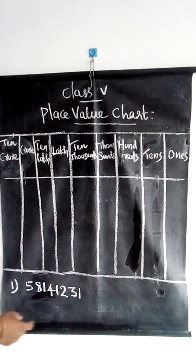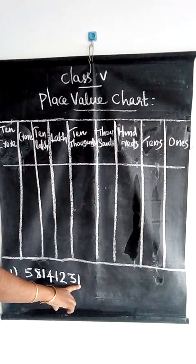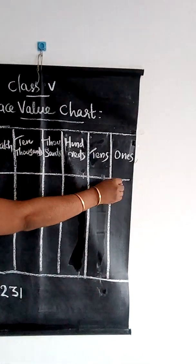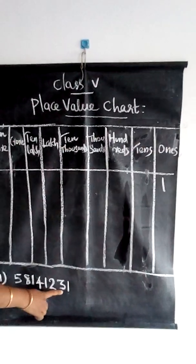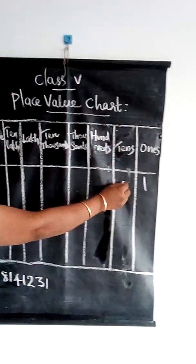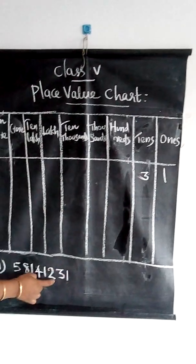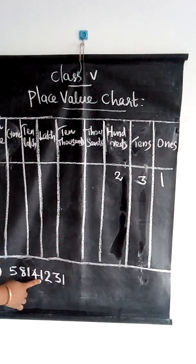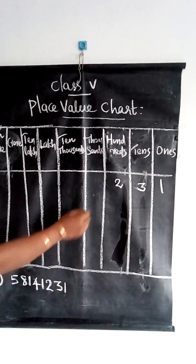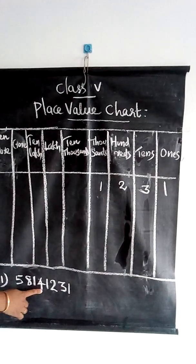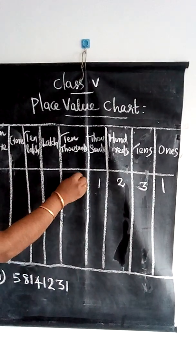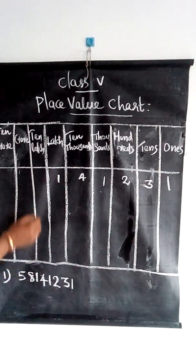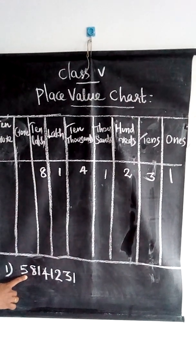First, this is the ones place — the digit is 1, so we write 1 here. Then tens place is 3, hundreds place is 2, thousands place is 1, ten thousands place is 4, lakh place is 1, ten lakh place is 8, and crore place is 5.